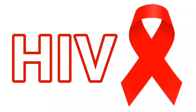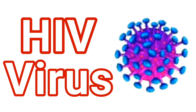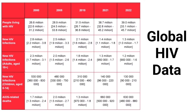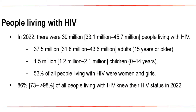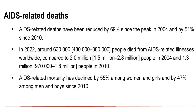HIV-AIDS is the most notorious of all the known sexually transmitted diseases around the world. Unfortunately, the statistics of infected persons keeps increasing year in, year out. According to UN AIDS Global HIV Statistics, an estimated 39 million people around the world were living with HIV as at the end of year 2022, about 1.3 million people became newly infected with the virus, while about 630,000 people died from AIDS-related illnesses by the end of the same year.